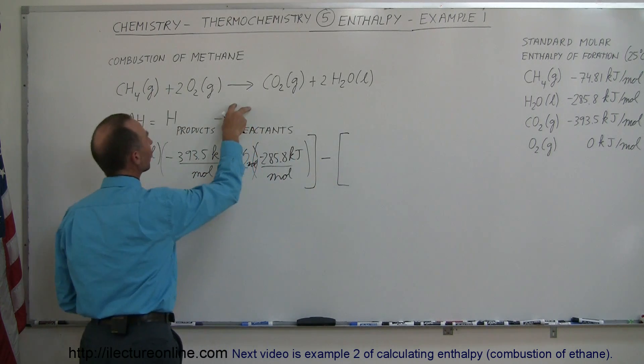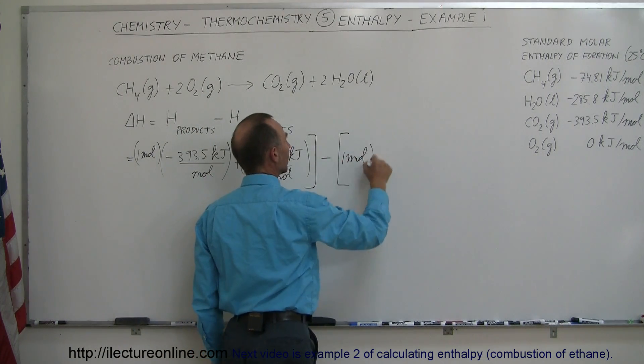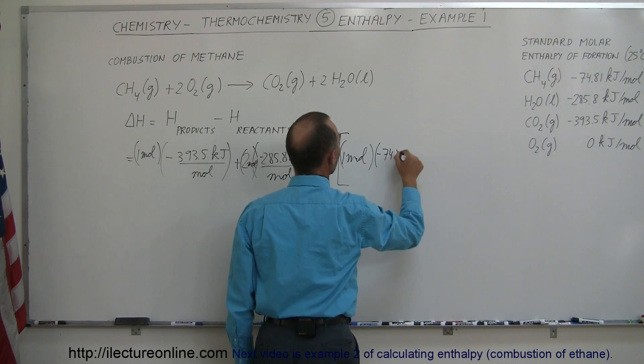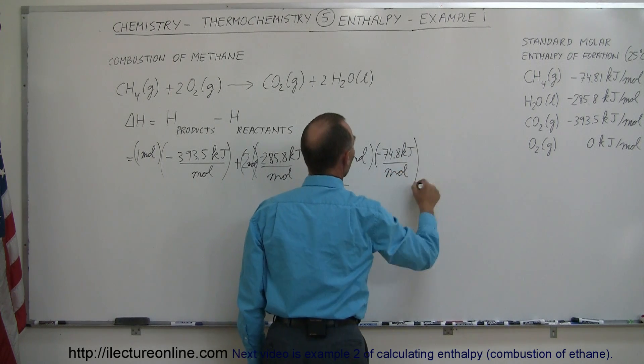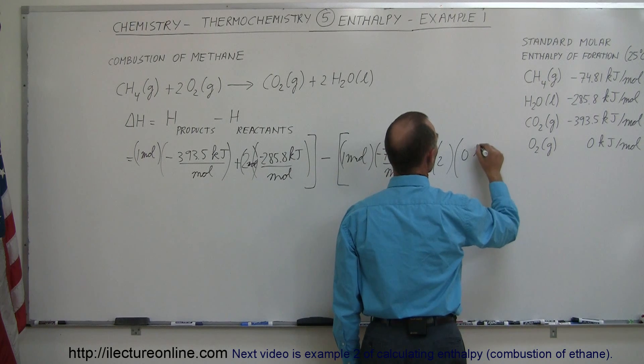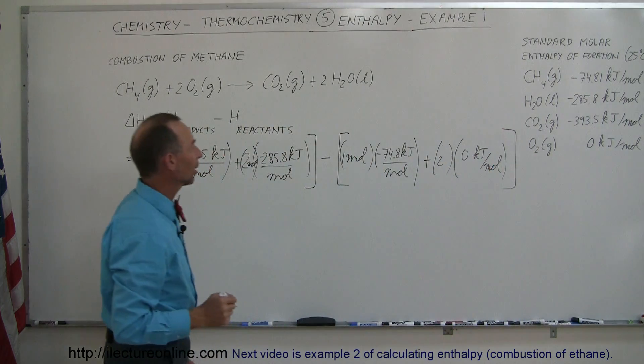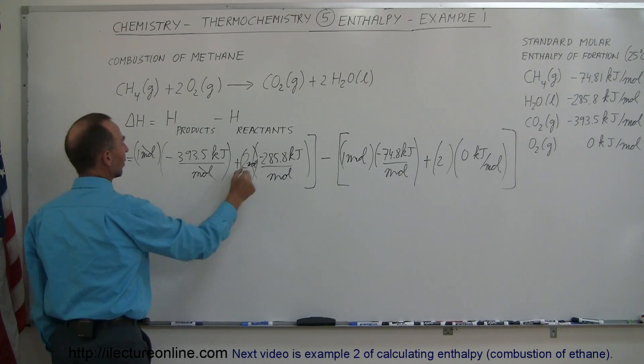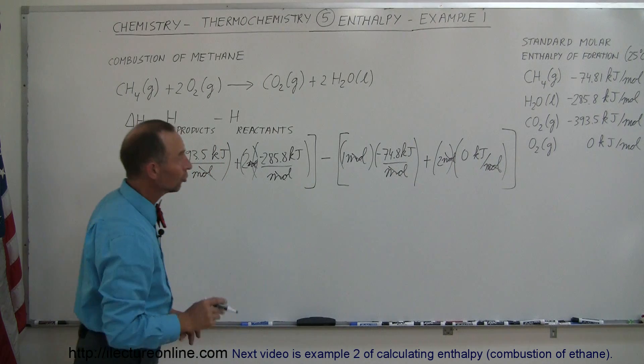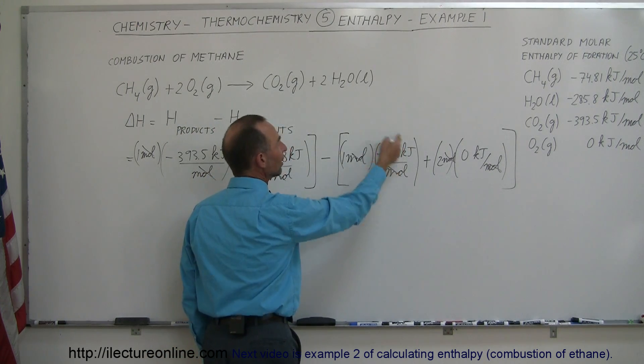Now from that we subtract the enthalpies of the reactants. The reactants are right here, methane and oxygen. We have one mole of methane times the enthalpy of formation for methane, which is right here, minus 74.8 kilojoules per mole, and then plus 2 moles of oxygen, 2 moles times 0 kilojoules per mole, because the enthalpy of formation of oxygen is 0. And there we go, there's our equation. Now notice that the moles cancel out, so we end up with just kilojoules. Also notice that this is negative, and this is negative, and here we subtract a negative number, so minus times the minus, this part becomes a plus.